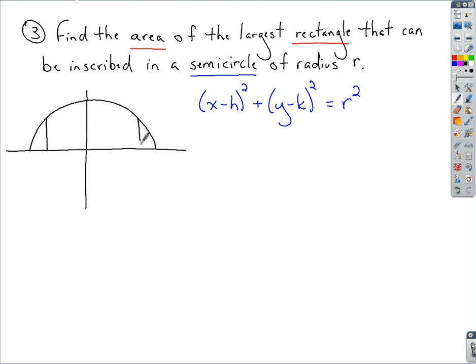We've got an inscribed rectangle. Despite this artistic rendition, this rectangle is supposed to be evenly split there across the y-axis. What I'm doing here on purpose, I'm centering my circle at the origin. It just makes sense to do that to keep this situation easier, more manageable to work with.